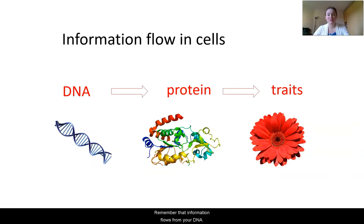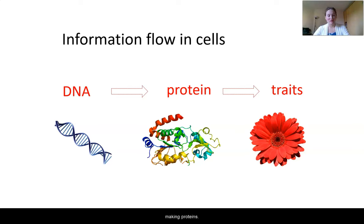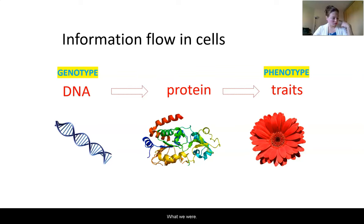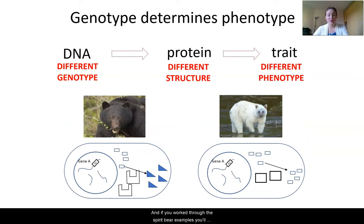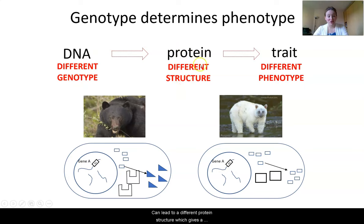Remember that information flows from your DNA through the process of making proteins to your traits. We have many, many traits within us that make us unique individuals, and it's all coded for in our DNA through the process of making proteins. Your DNA is your genotype, and your traits — the physical stuff we see and sometimes don't see, like diseases — that's your phenotype. Your genotype determines your phenotype, so your genes determine your traits. And as you'll see with the spirit bear examples, a different genotype can lead to a different protein structure, which gives a completely different phenotype.